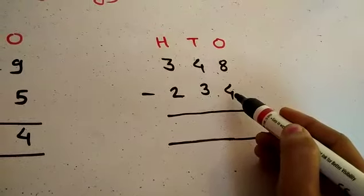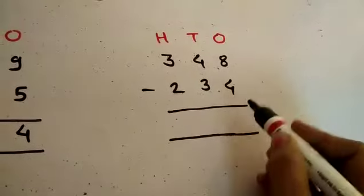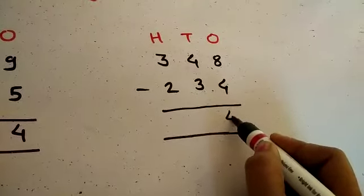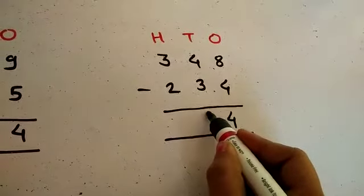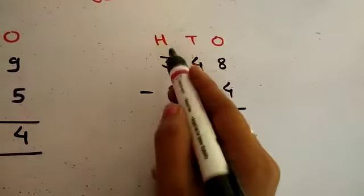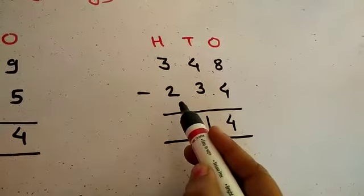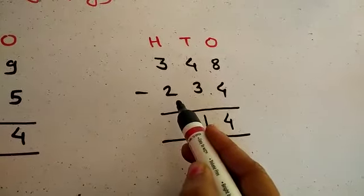8 minus 4 equals 4. Now the tens: 4 minus 3 equals 1. Now the hundreds: 3 minus 2 equals 1.